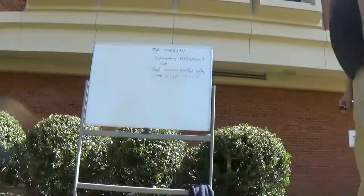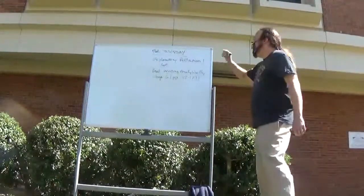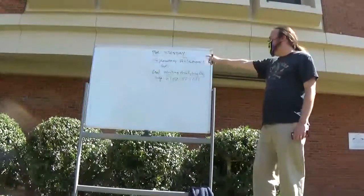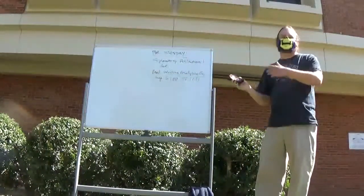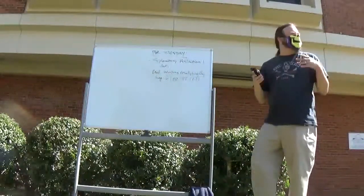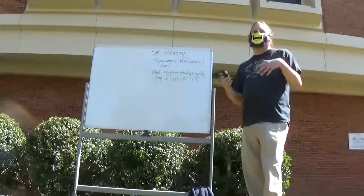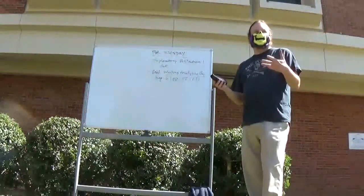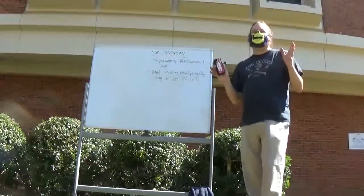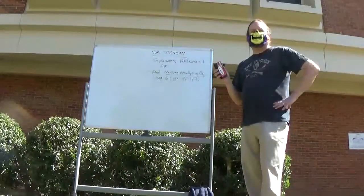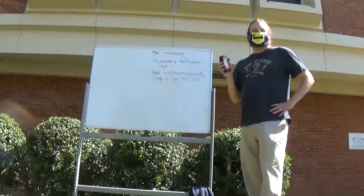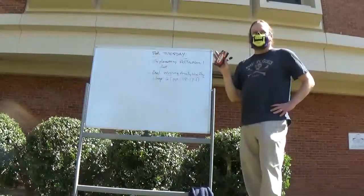May as well go ahead and get started. So for Tuesday, you're doing the first exploratory reflection and you're reading Chapter 6 in Writing Analytically. We're going to be going back to the rhetoric textbook for about a week while we get ready to work on the first big paper. Give you a minute to write things down, to think about it.